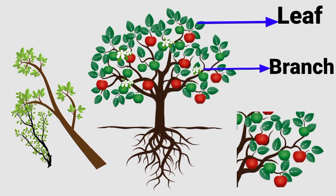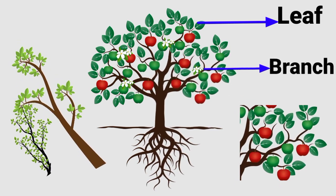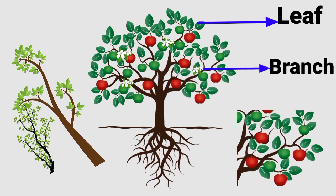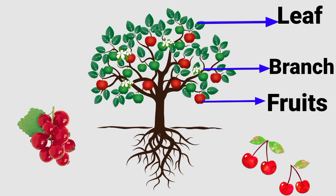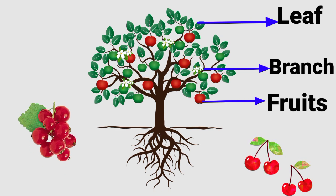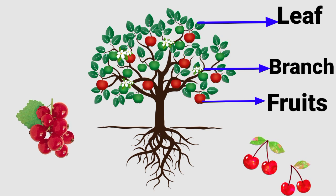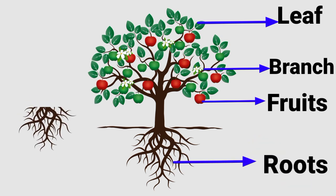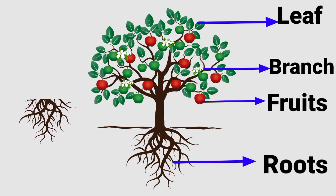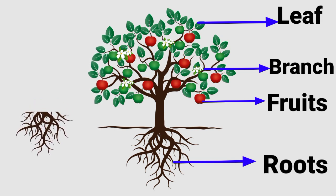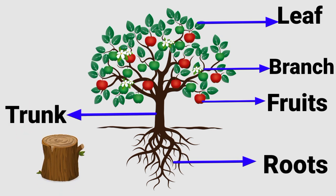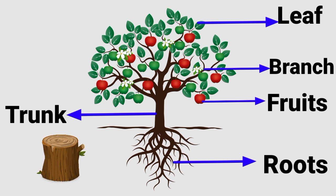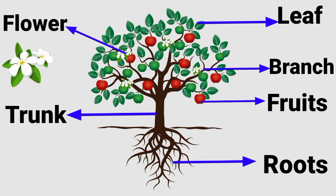Branch. Branch — can you say that? Branch. Good job! Fruits. Fruits — mmm, this looks yummy! Roots. Roots. Trunk. Trunk — can you see that? That is a tree trunk.